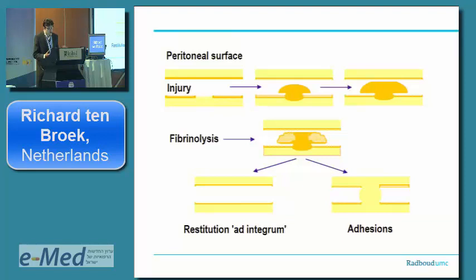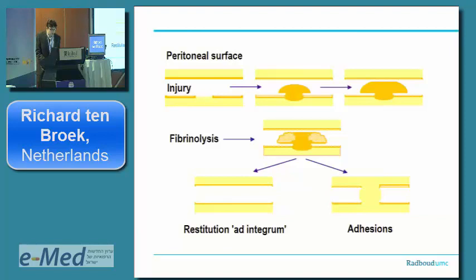Very simply: you have injury to the peritoneal surface, you get a coagulation clot, then the body has a fibrinolytic system which can result in ad-integra restitution. Or, if it's not fully restituted, an adhesion is formed. In rats these adhesions are very active; in humans usually not. Most of the time when we operate we do get adhesions in more or less some form. There's been quite a lot of research into genetic predisposition and cytokines involved in adhesion formation, but really for clinical practice there isn't much to it so far.